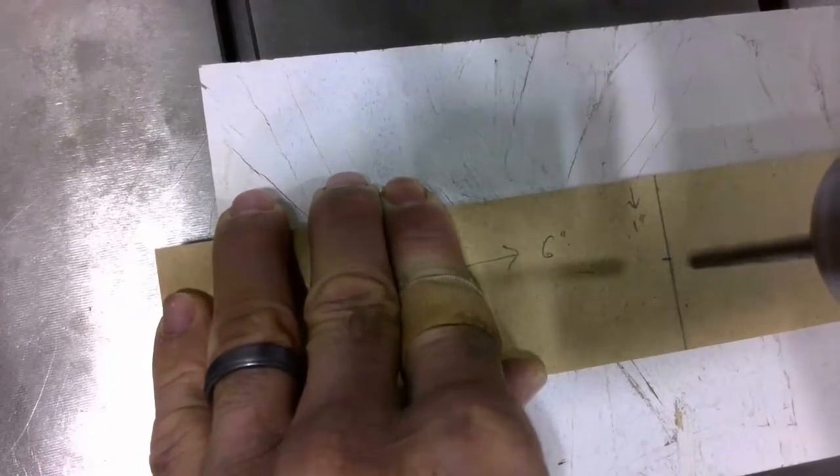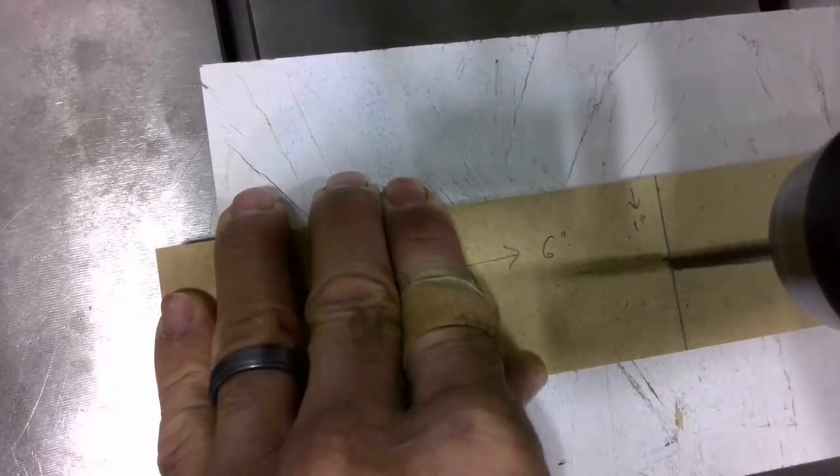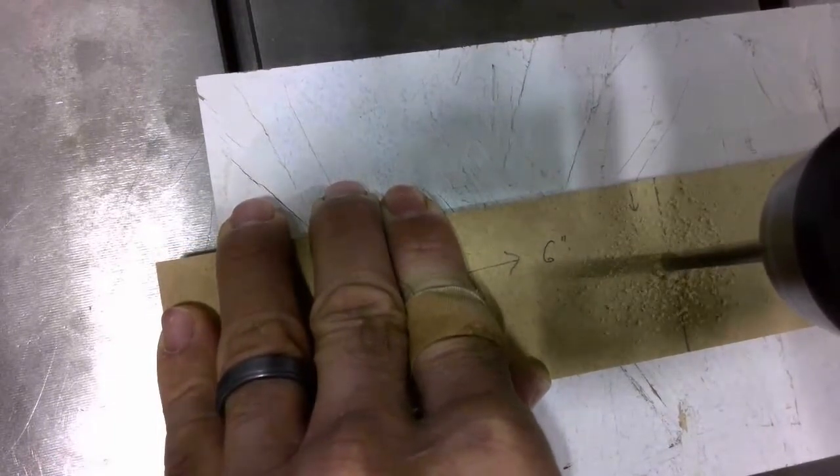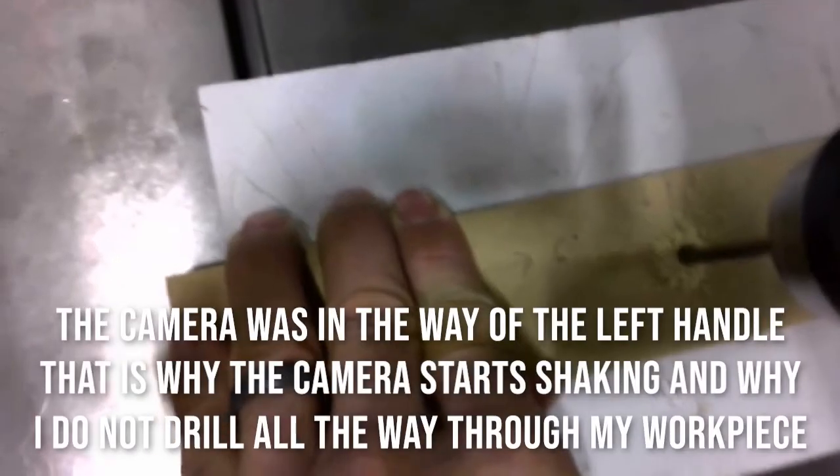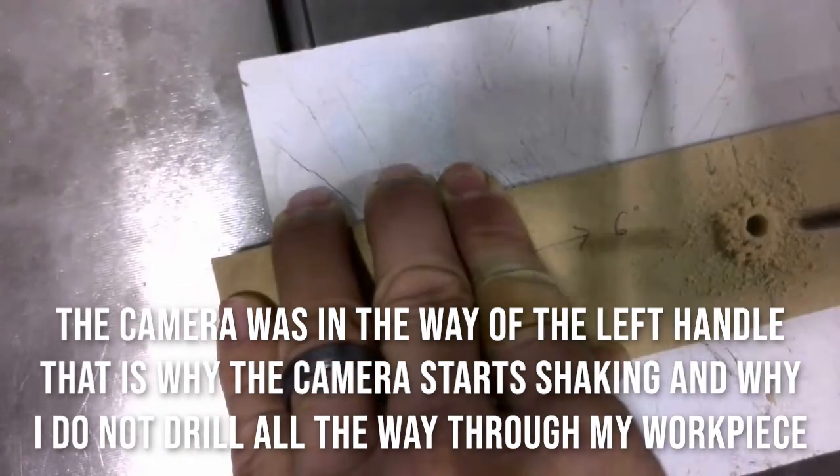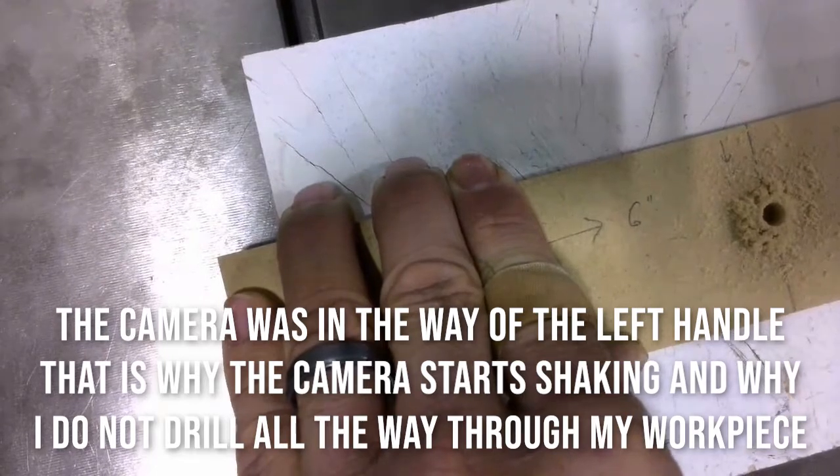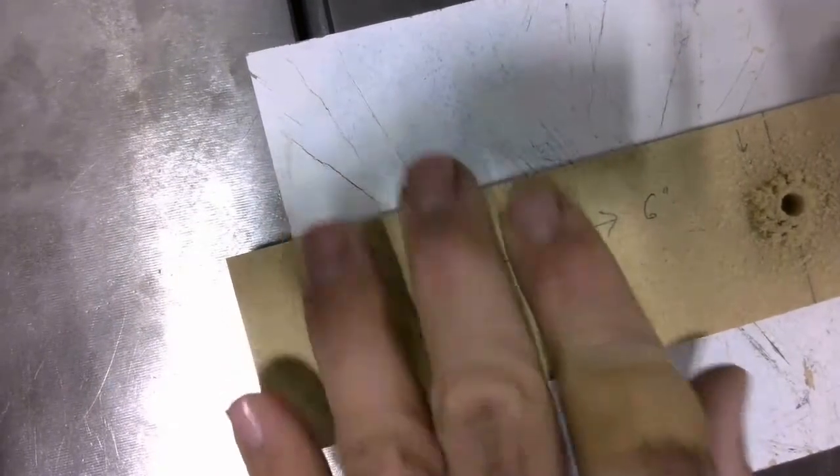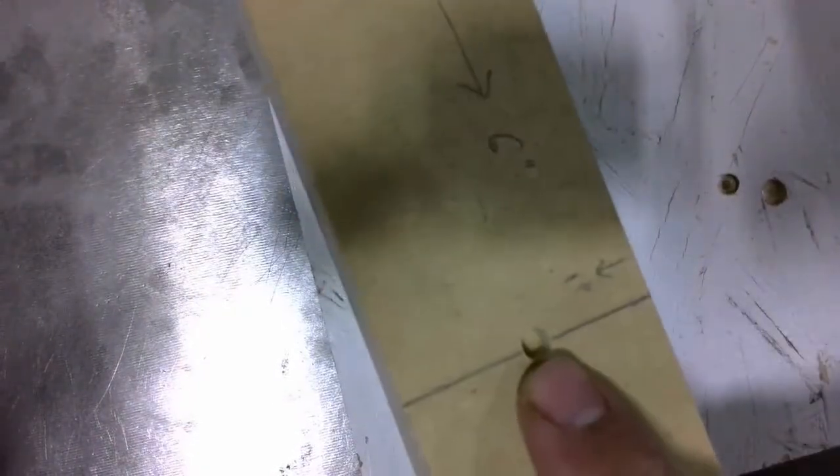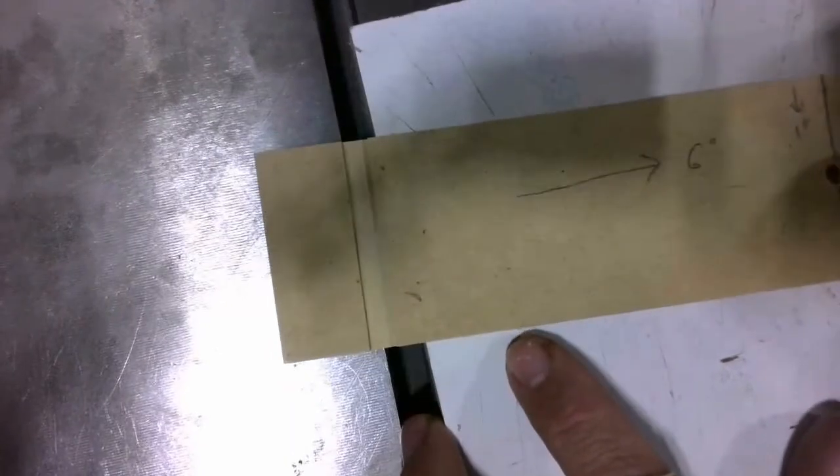I'm holding my workpiece steady with my left hand and slowly lowering the quill with my right hand and now with gentle pressure, I'm going to drill through my workpiece. Once I've finished drilling my hole, I want to check and make sure I got all the way through. You can see that I did not get all the way through my workpiece and that's because the handle of the drill press was actually hitting the camera as I was drilling. So I'm going to move the camera and re-drill this hole.